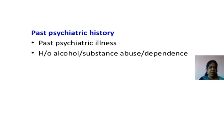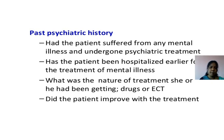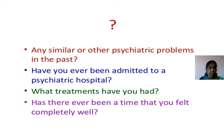In past psychiatric history, we see past psychiatric illnesses, history of alcohol, substance abuse and dependence, when the patient started suffering from mental illness, whether hospitalized earlier, the nature of treatment — drugs only or ECT — and whether the patient improved with treatment. We ask about similar psychiatric problems in the past, which psychiatric hospital they attended, where treatment was received, and whether there was ever a time they felt completely well.